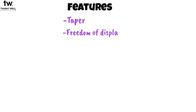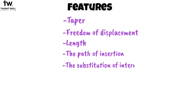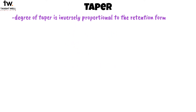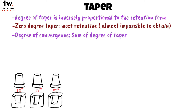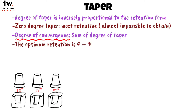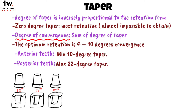To get the proper resistance and retention forms, certain features in preparation should be considered. These are taper, freedom of displacement, length, the path of insertion, and the substitution of internal features. The degree of taper is inversely proportional to the retention form. Zero degree taper is the most retentive but is almost impossible to obtain. The sum of the degree of taper is known as the degree of convergence. The optimum retention is 4 to 10 degrees of convergence. Anterior teeth should have a minimum of 10 degree taper and posterior teeth a maximum of 22 degrees taper.